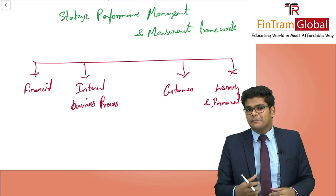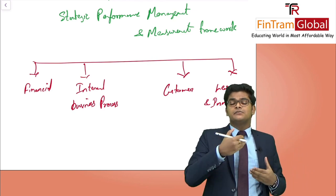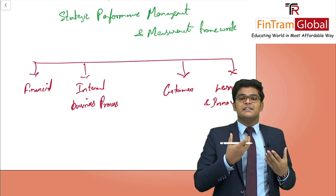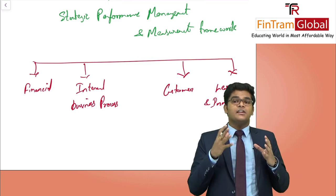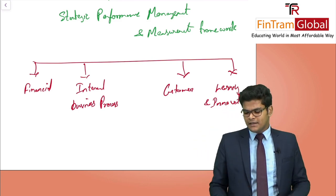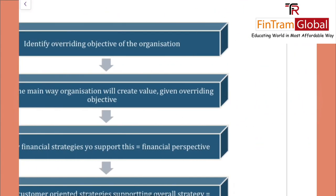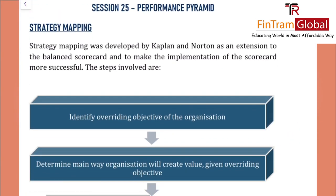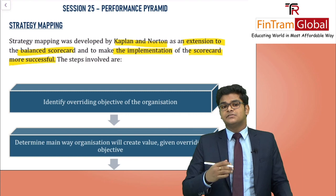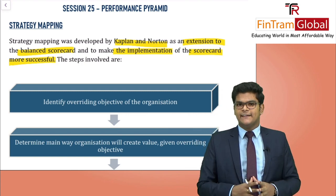How exactly will we implement this balanced scorecard framework in an organisation? That is where strategic mapping comes into play. Strategy mapping is an extension to the balanced scorecard approach that helps implement it within an organisation. It was developed by Kaplan and Norton to make the implementation of the scorecard more successful — to enable the balanced scorecard to be implemented in a more effective manner.